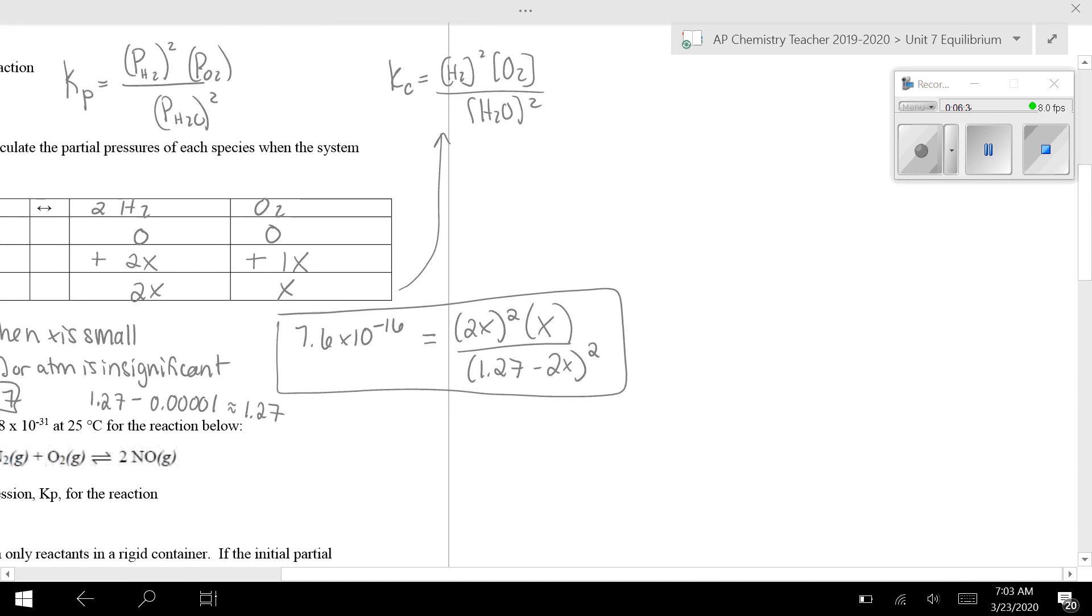So if I go back over here, I can simplify this and say 7.6 times 10 to the negative 16 is 2X squared times X divided by 1.27 squared. And that becomes just so much easier now. So I'm going to multiply both sides by 1.27 squared.